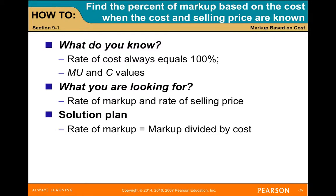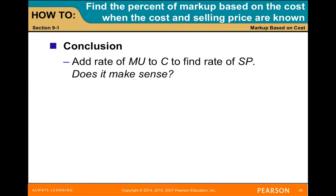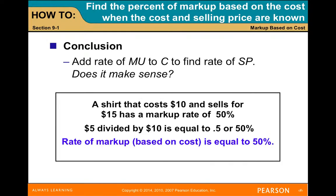We set up our solution plan: the rate of markup equals the markup divided by the cost. Now we carry out the operation. Add the rate of markup to the cost to find the rate of the selling price. Does it make sense? A shirt that costs $10 and sells for $15 has a markup rate of 50% — 5 divided by 10 equals 0.5 or 50%. Rate of markup based on cost is 50%.